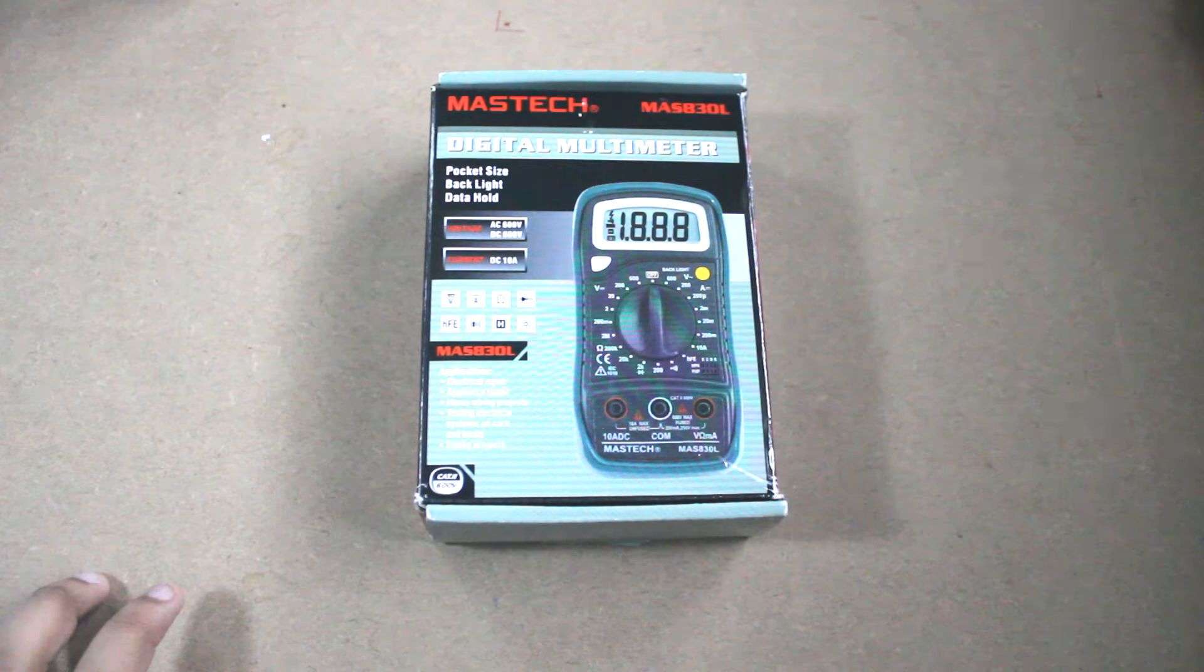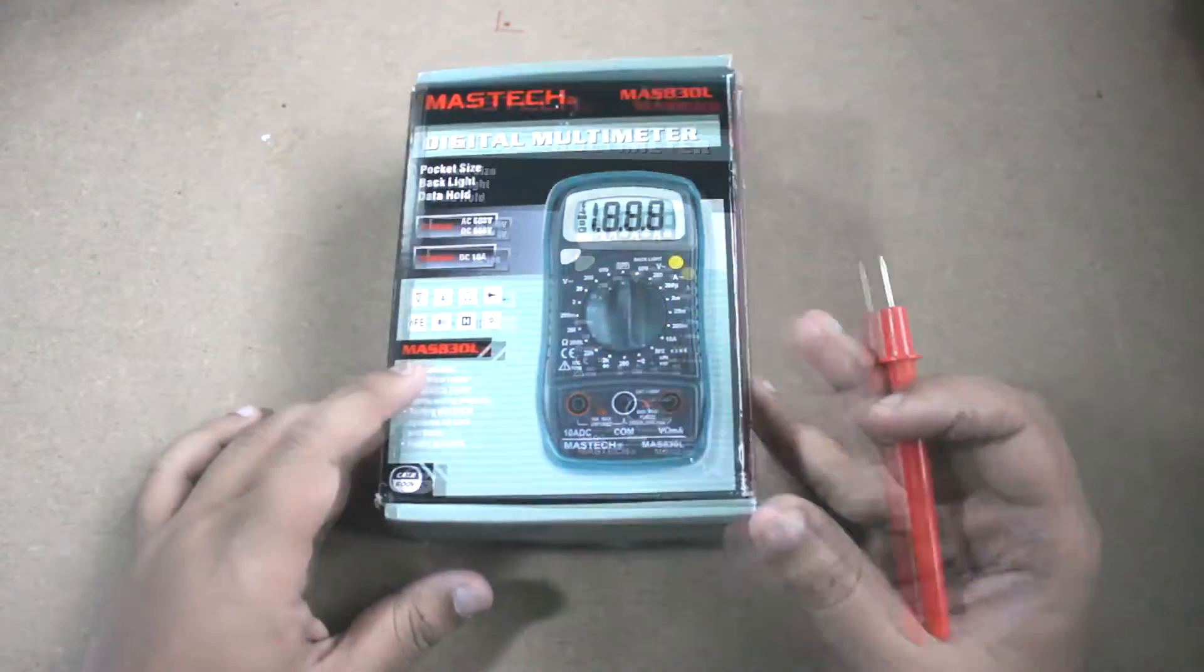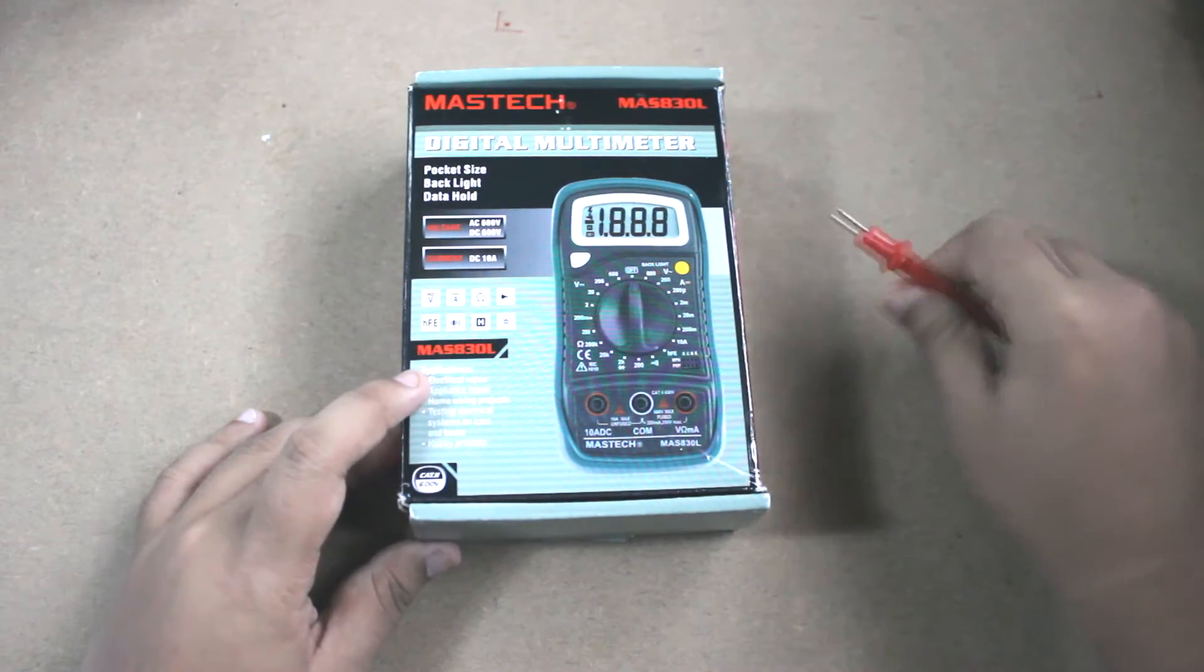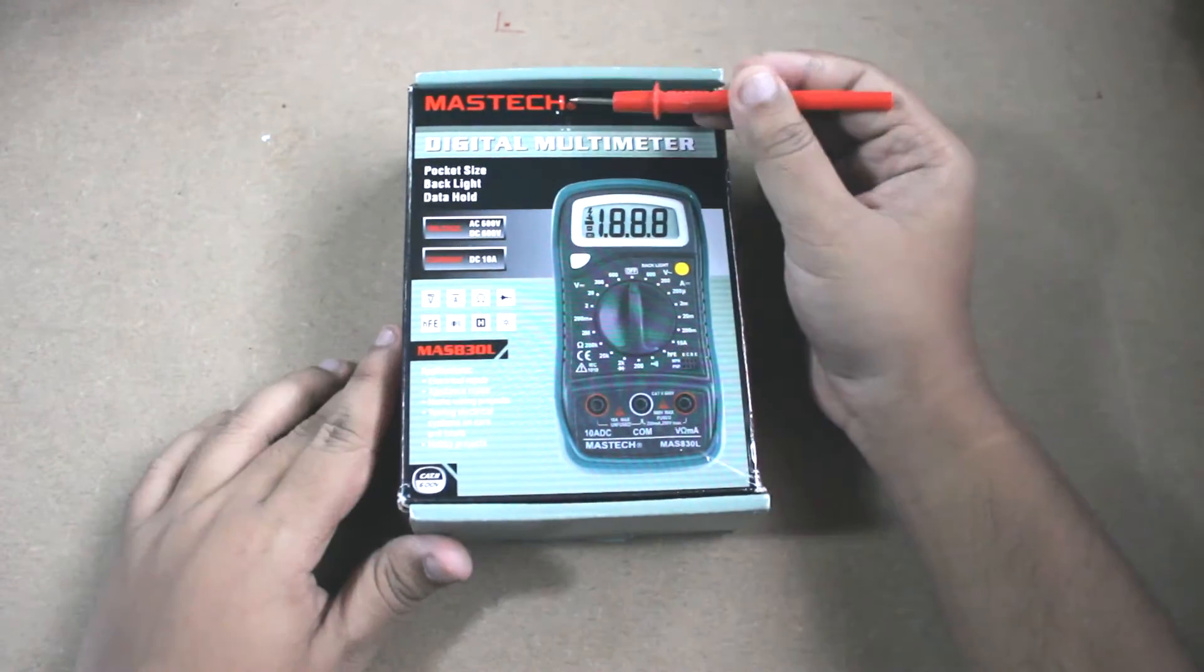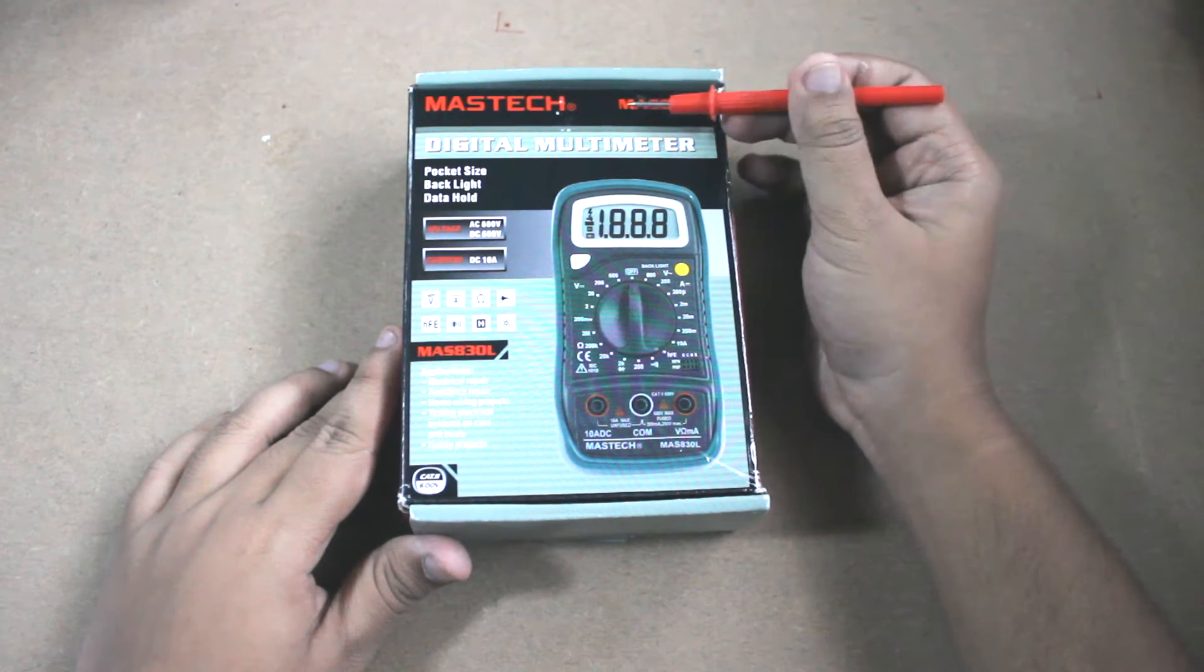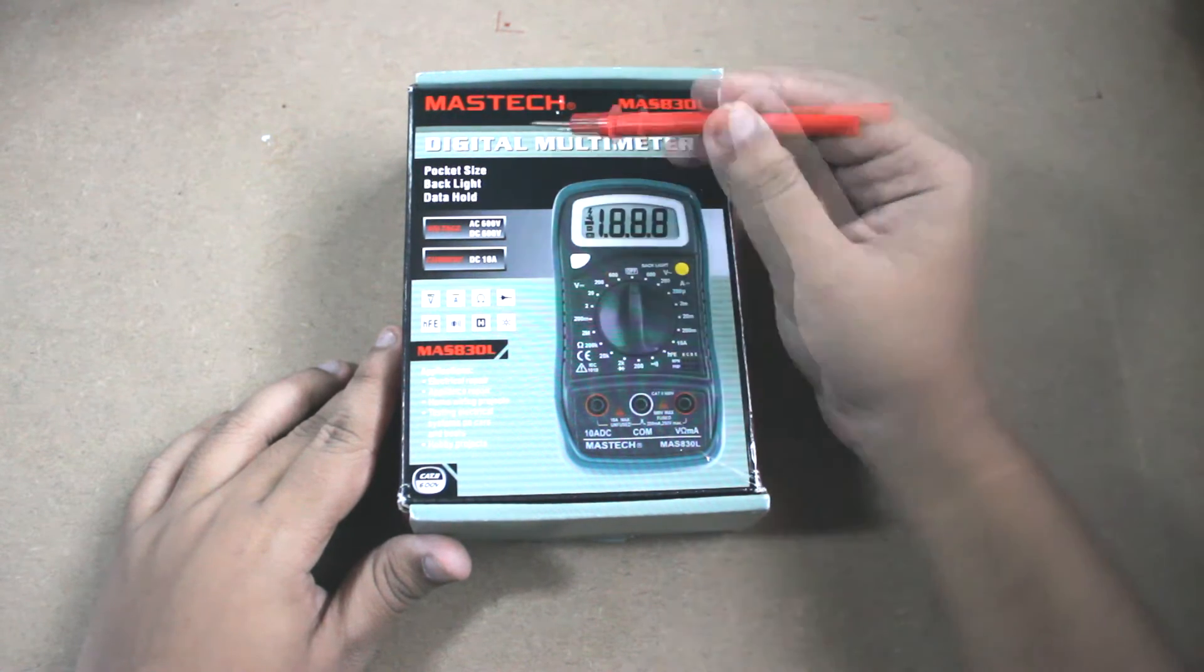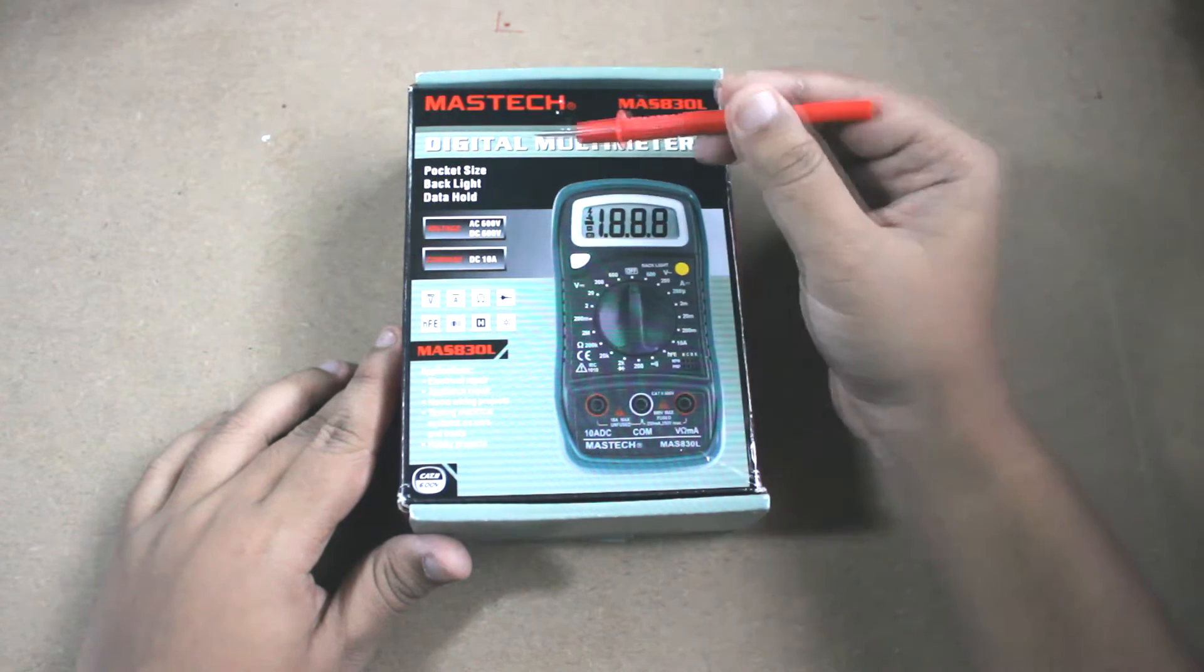Now let's see what is on the box. It says the brand name Mastek, the serial number MAS 830L, digital multimeter, pocket size.